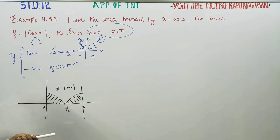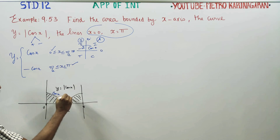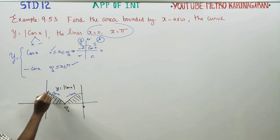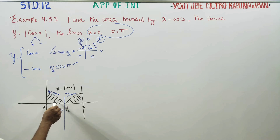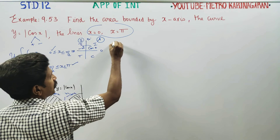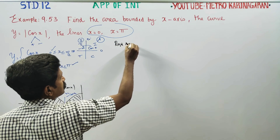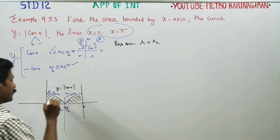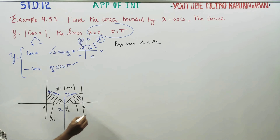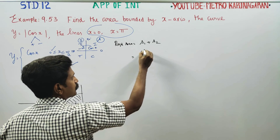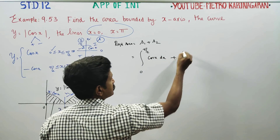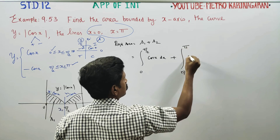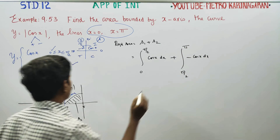I am going to use plus cos x. The integral breaks at x equal to pi by 2. The integration gives 2 areas. Required area is equal to A1 plus A2. A1 is from 0 to pi by 2 of positive cos x dx, plus A2 from pi by 2 to 180 of minus cos x dx.